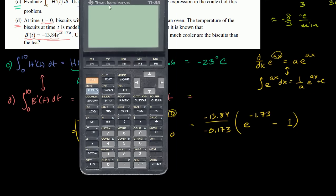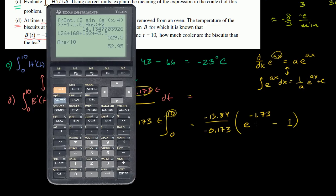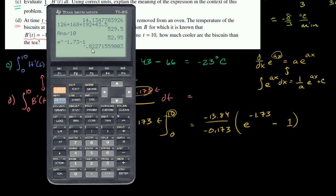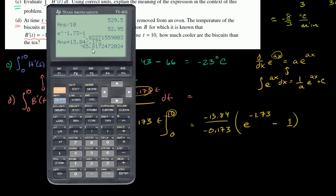Getting out my TI-85, I evaluate e to the negative 1.73, then subtract 1. That gives approximately negative 0.822. Then I multiply by 13.84 divided by 0.173 — I don't write the negatives because negative divided by negative is positive, so they cancel out. That gives me negative 65.817.